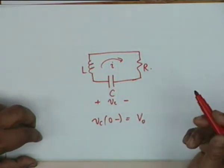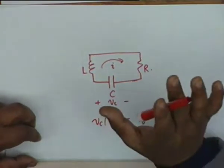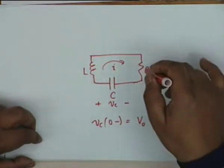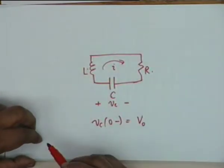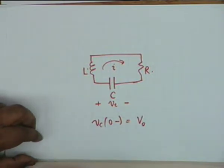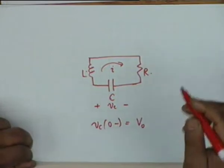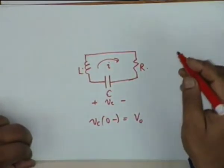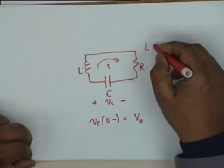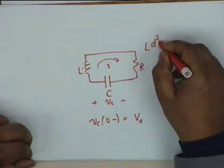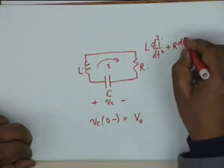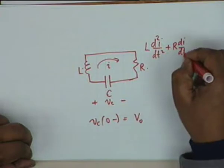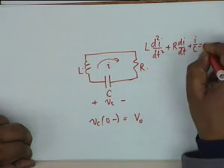The initial condition is that VC(0 minus) is V0. As time increases, the current at T equal to 0 would be 0, and then the current would gradually increase and then decrease. After an infinite amount of time it would decrease to zero. Qualitatively this is the phenomenon, but depending on the relative values of R, C, and L, the behavior would be quite different. The differential equation is L d²i/dT² plus R di/dT plus i/C equal to 0.